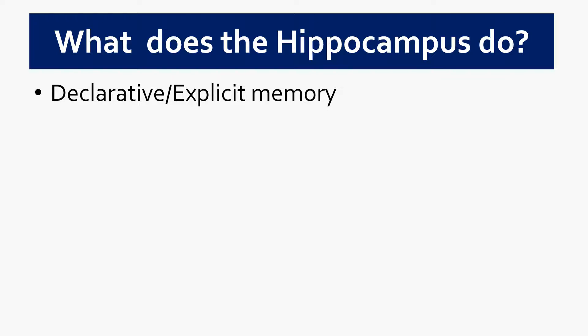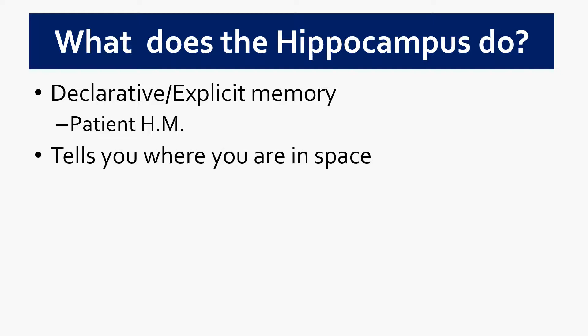Declarative memory is memory for facts and figures — the sort of things we think of when we try to remember or learn something. Much of the famous literature about hippocampal function comes from a very famous patient in psychology, patient HM, who had bilateral damage to his hippocampus as a result of a surgical procedure. Patient HM could not lay down new memories and so lived his life in a 30-second bubble.